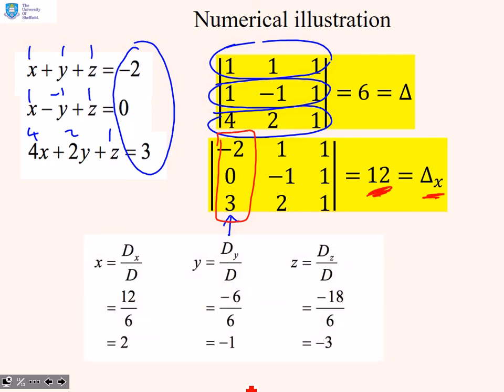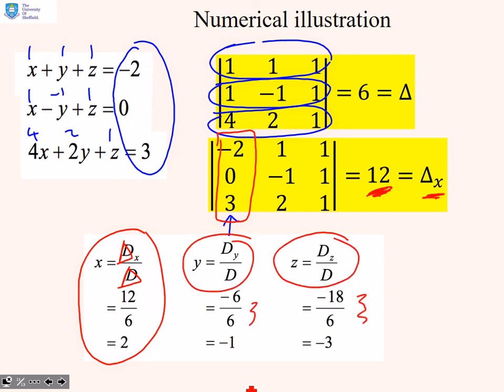I've used dz instead of delta, which is a bit clumsy. Now I can write x is 12 over 6, which is 2. I don't need to solve for y and z, I've got x anyway. But if I want to, I can use these expressions to find y and z. I've given you the answers here. If you want to do it in your own time, just pause the video so you can write the numbers down carefully and see if you get the correct answers.